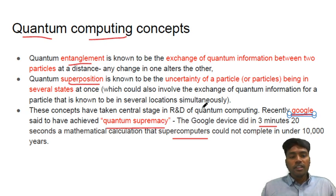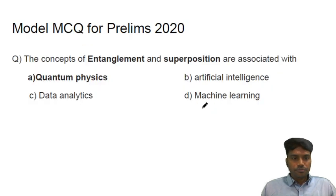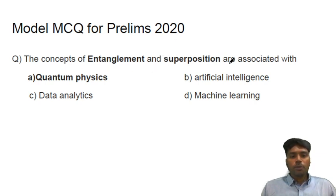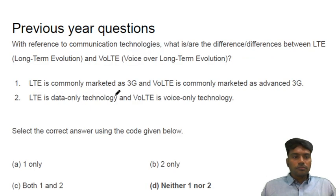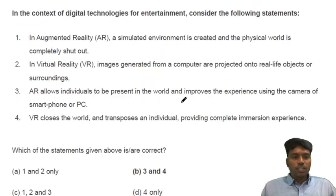Don't go much deeper into that. Just understand it at a conceptual level and how they implemented it. Model MCQ: the concepts of entanglement and superposition are associated with quantum physics. Looking at previous year questions, in 2019 only, they asked about LTE and Volta technology. Another question was on augmented reality and virtual reality.